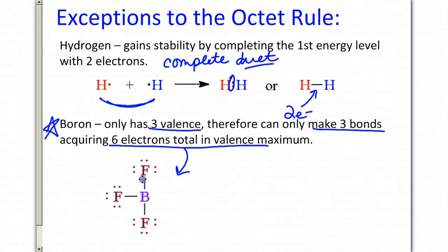Fluorine, on the other hand, each fluorine atom does have its octet. 2, 4, 6, 8 electrons around that fluorine. 2, 4, 6, 8 around this one. 2, 4, 6, 8 around that one. So each fluorine has an octet, but the boron only has six electrons valence maximum. Notice that these little pairs around the fluorine I'm referring to as lone pairs. And notice that hydrogen does not have any. Hydrogen should never have pairs of electrons around them.